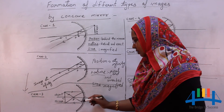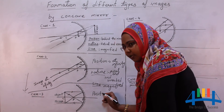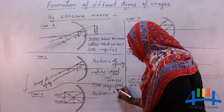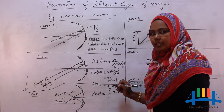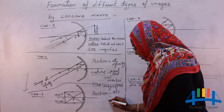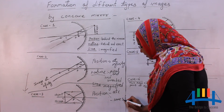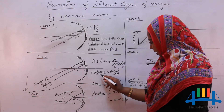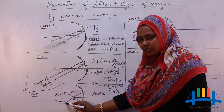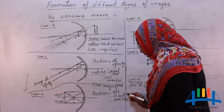The position of this image is at the center of curvature — you can write at C. The size of the image is the same size as that of the object. The nature of the image: the rays are really meeting, so it is a real image, and inverted — real and inverted.